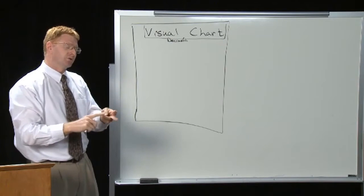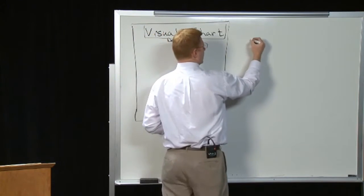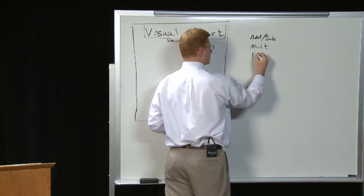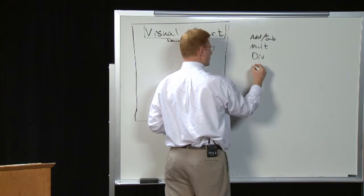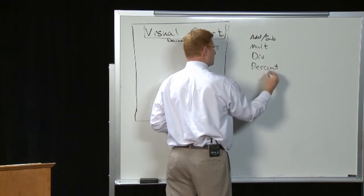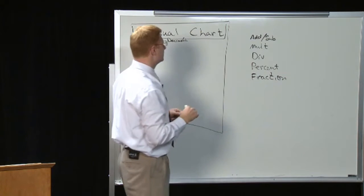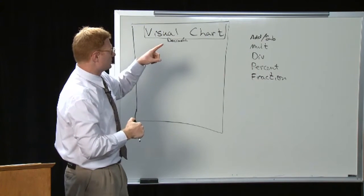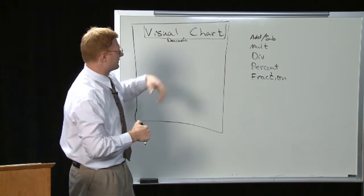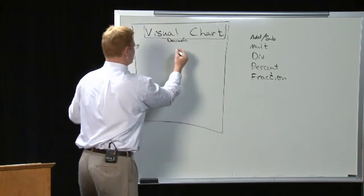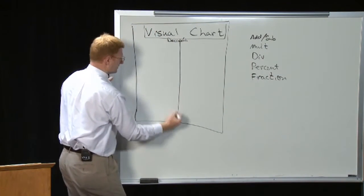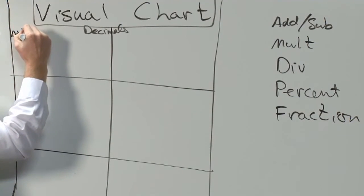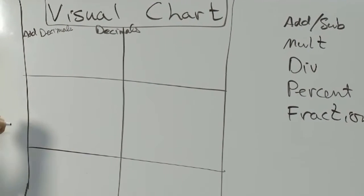And you think of all the things that you can do with decimals now. You can add and subtract them. You can multiply them. You can divide them. You can change them into a percent. You can change them into a fraction. What else can we do with them? That's a good start. One, two, three, four, five. If we use these, we have six of them. And you divide it up and you say, okay. I now have six things. Everything I ever wanted to know about adding decimals goes in this little box right here.